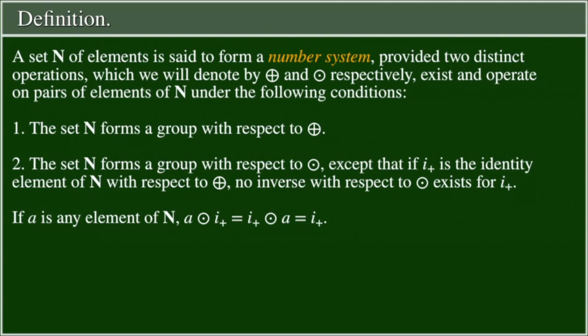The set N forms a group with respect to addition. 2. The set N forms a group with respect to multiplication, except that if i is the identity element of N with respect to addition, no inverse with respect to multiplication exists for i. If a is any element of N, a times i equals i times a equals i.